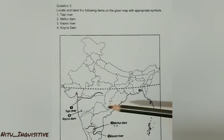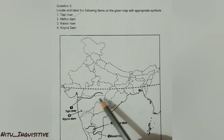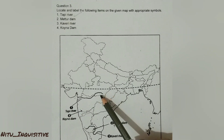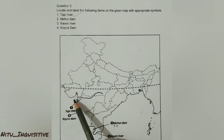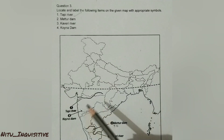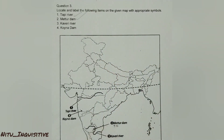The next important question is to locate and label the following items on the given map. First is the Tapi River, which originates in Madhya Pradesh from the Betul district. It flows from the central part of India towards the western part. Tapi River is also spelled 'Tapti.' Next is Mettur Dam, one of the largest dams in Tamil Nadu, located on the Kaveri River.